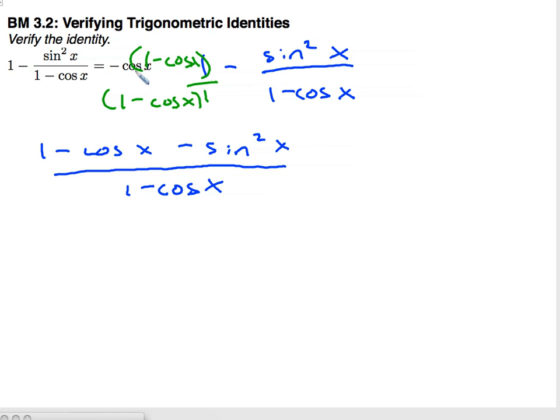Now, since my end goal is to have a cosine, I'm going to change this sine squared using my Pythagorean identity. Sine squared plus cosine squared equals 1. So 1 minus cosine x minus 1 minus cosine squared x over 1 minus cosine x. I've replaced that sine squared with 1 minus cosine squared using the Pythagorean identity.